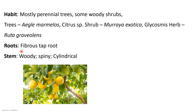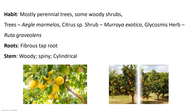The root is a taproot system but fibrous in nature. The stem is woody, spiny, and cylindrical — as you can see in this orange tree here. The stem is cylindrical and woody, and spiny stems are very prominent in Todalia species, specifically Todalia asiatica, which is very spiny.